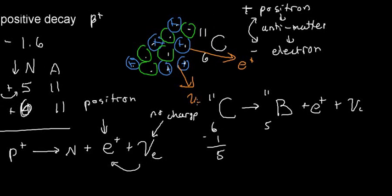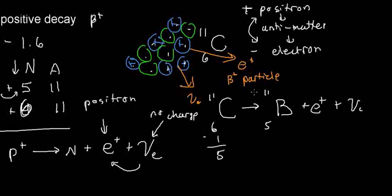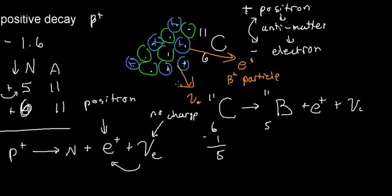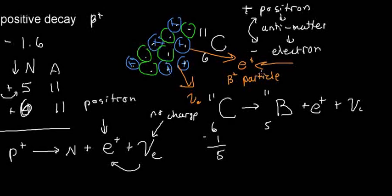We already know that this positron is also referred to as the beta positive particle. This is pretty much how positive beta decay occurs. In the next video we'll discuss what really happens to this positron as it comes out.